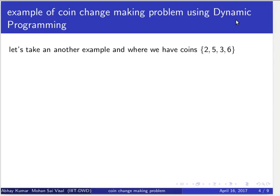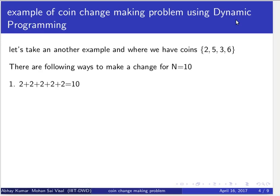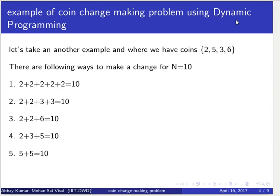We have coins: 2 rupees, 5 rupees, 3 rupees, and 6 rupees. We have to give change for n equals 10. There are the following ways to make change for n equals 10: five 2-rupee coins equals 10; 2 plus 2 plus 3 plus 3 equals 10; 2 plus 2 plus 6 equals 10; 2 plus 3 plus 5 equals 10; and 5 plus 5 equals 10.